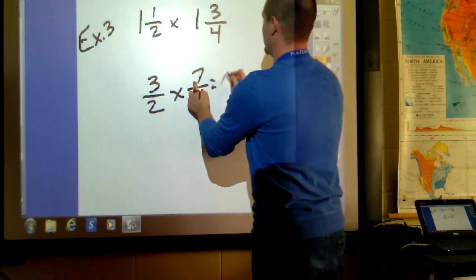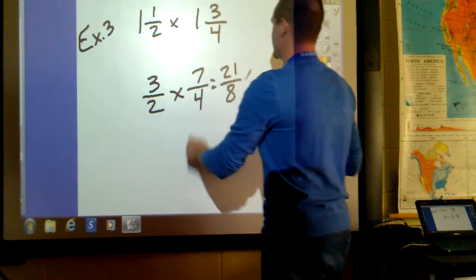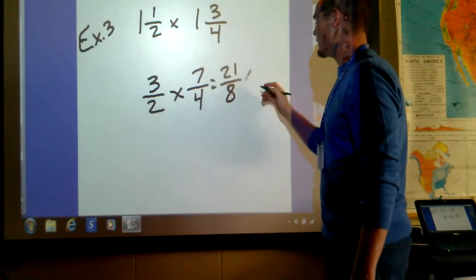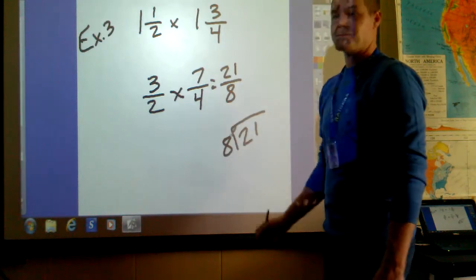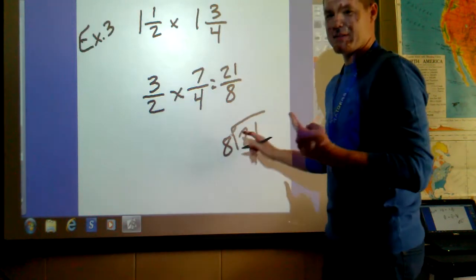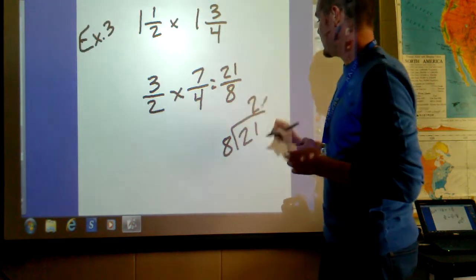3 times 7 is 21. 2 times 4 is 8. I have an improper fraction as an answer, as a product. I need to take 21 and divide it by 8. 8 times 2 is 16. 8 times 3 is 24. 24 is greater than 21, so I'm going to stick with 2.